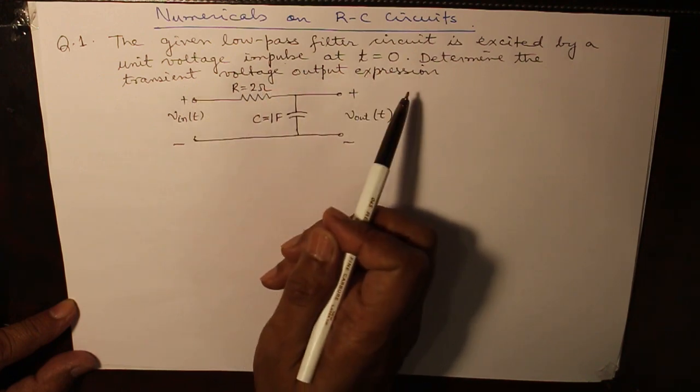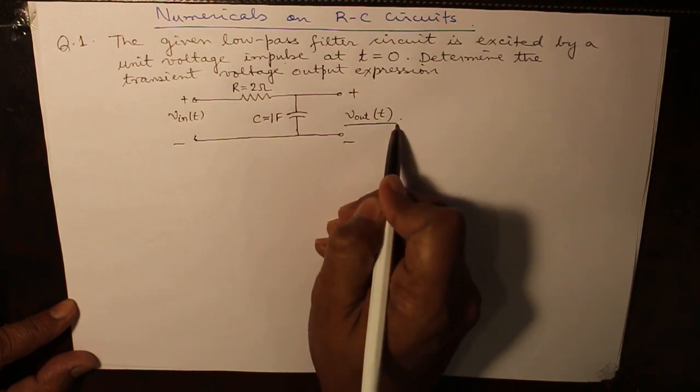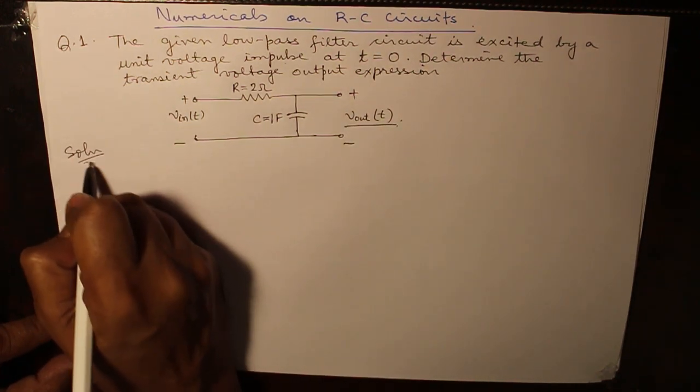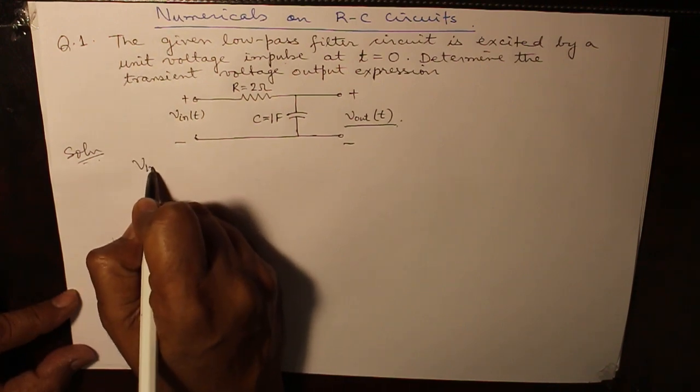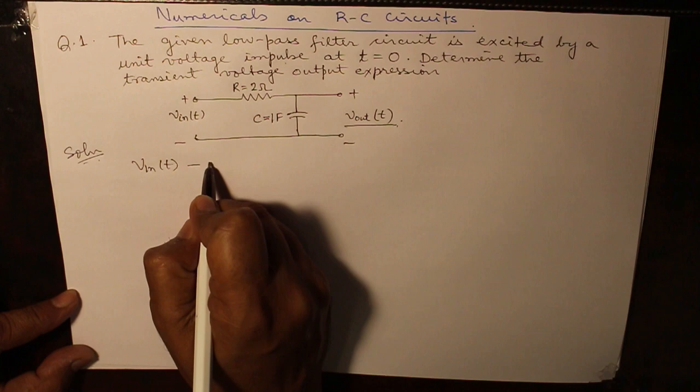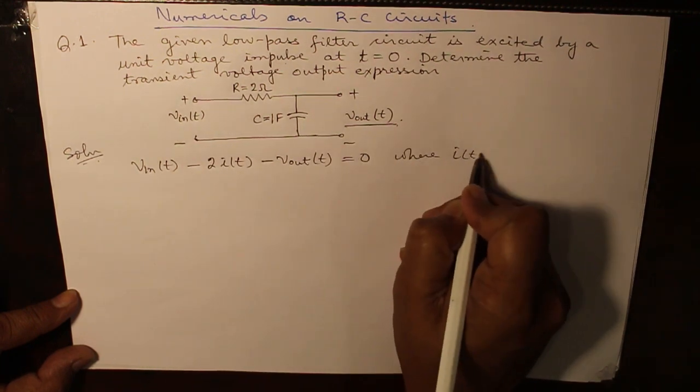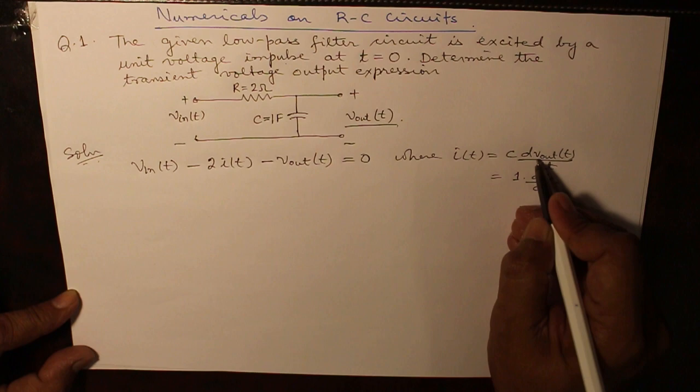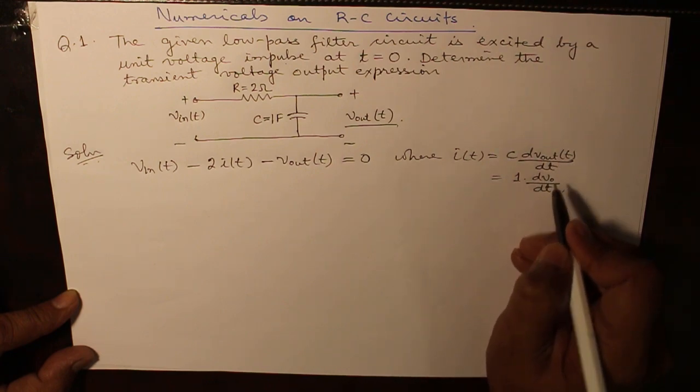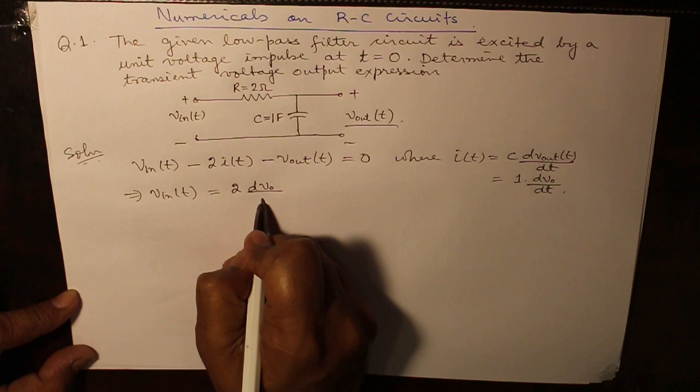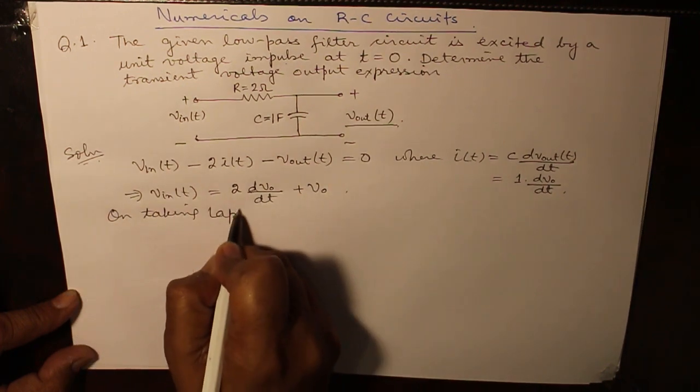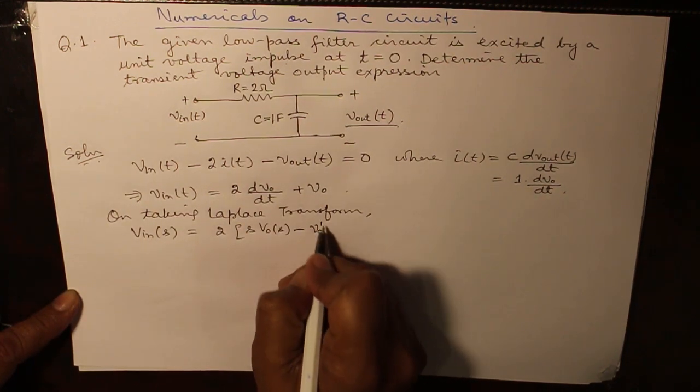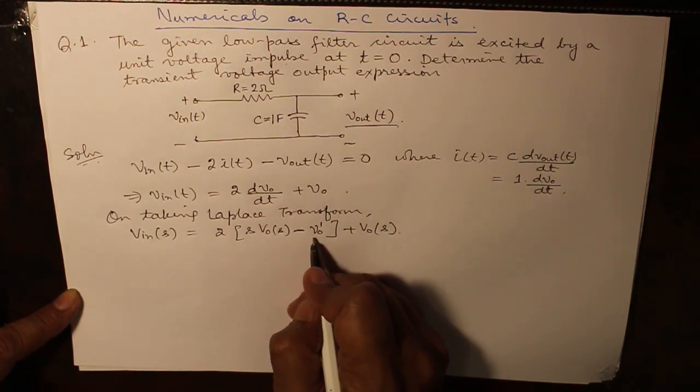We determine the transient voltage output expression V_out(t). This is done in a similar manner as the derivation was done. We apply KVL. We have denoted V_out(t) as V_0. On taking Laplace transform, here no initial condition has been specified so we will consider V_0 as zero.